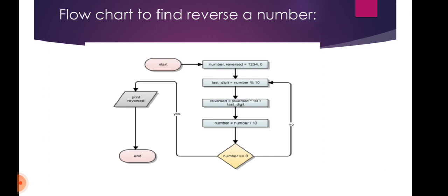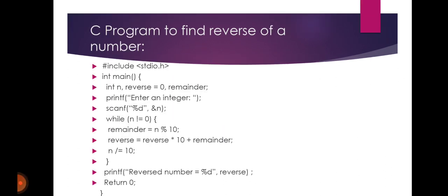By using the algorithm, flowchart, and programming, we can write a program that outputs the reverse number. Next: C program to find the reverse of a number. The program follows the same logic as mentioned in the algorithm and flowchart. First, we write: #include <stdio.h>.